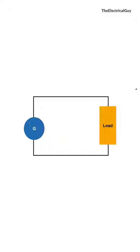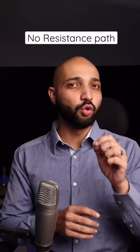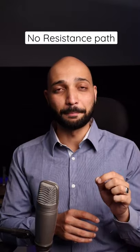What you just saw is caused by a short circuit. A short circuit is a situation in which an unwanted path of no or very low resistance is created in the circuit. As a natural tendency of current, all the current will try to flow through that no or very low resistance path. As a result, it may cause explosions.